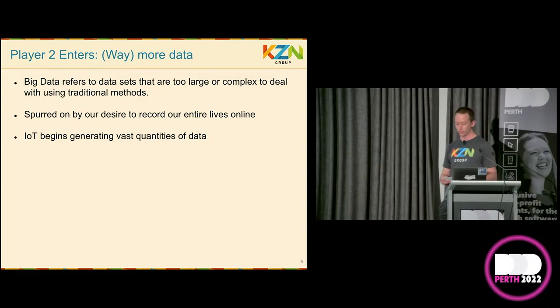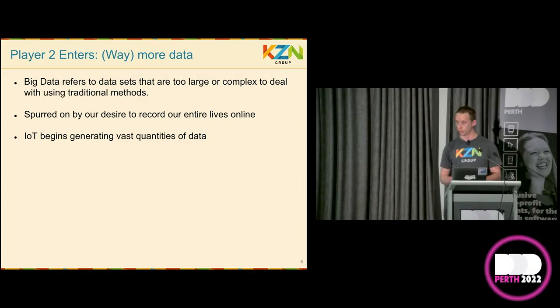Now, as we move forward to roughly 2011, we get into the age of big data. Let's define big data before we move forward. Big data refers to data sets that are too large or complex to deal with using traditional methods — traditional methods largely being data warehouses. Now, what caused the rise of big data? Lots of things. But a major one was social media companies realizing how much money they can make from pushing us personalized ads.